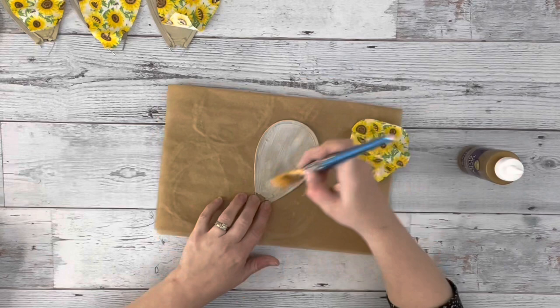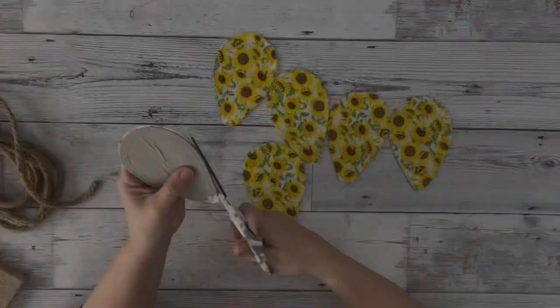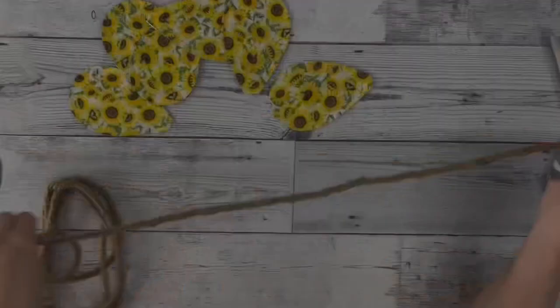So I ended up using the tacky glue and just placed down my fabric right on top of there and smoothed it out, and I did that to all of them. After I had them all covered, I just went around and trimmed up the excess fabric.